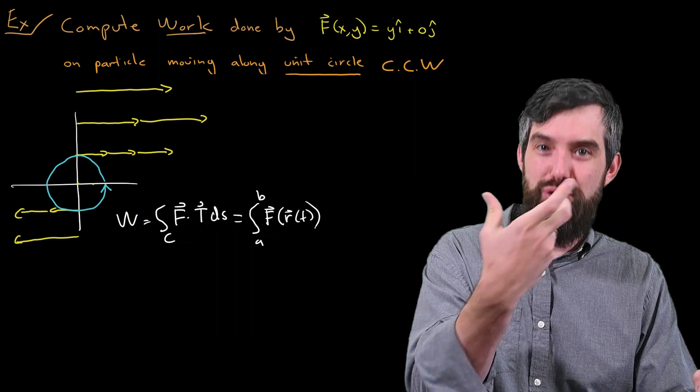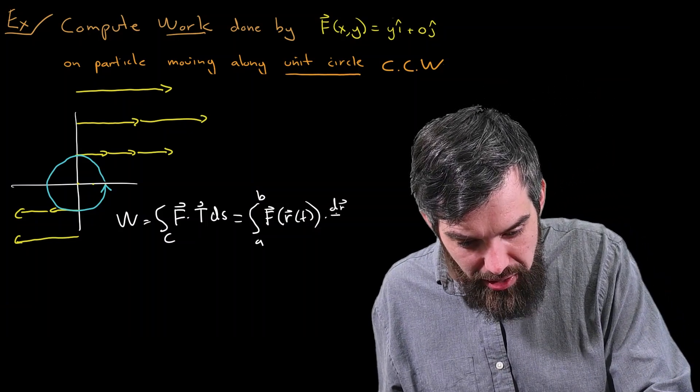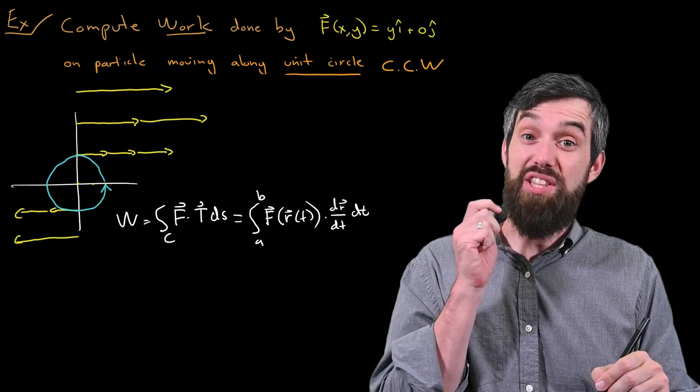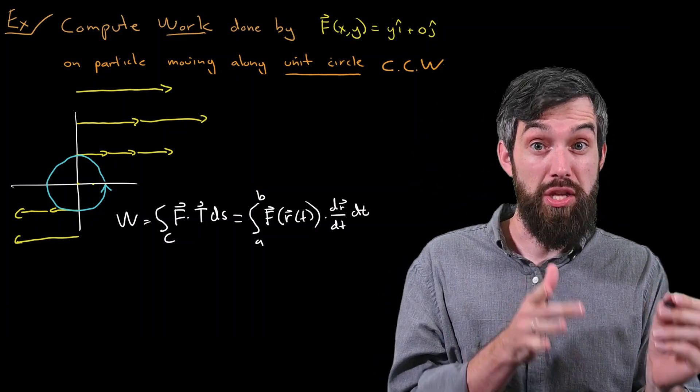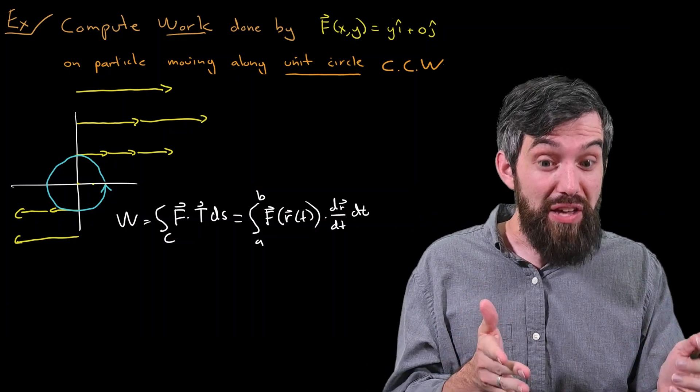So f evaluated along r(t), where r(t) is your parametrization for your curve, dotted with the derivative dr/dt, and then finally integrated with respect to t. And it's this formula that I'm going to find particularly useful. Now, what do I need to do to actually be able to compute this?